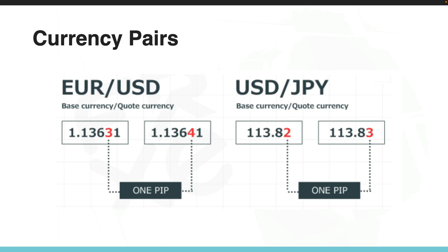In most currency pairs, a pip represents the fourth decimal place in the exchange rate. For example, in this diagram you can see that on the fourth decimal place there is an increase from three to four — that is an increase of one pip movement.